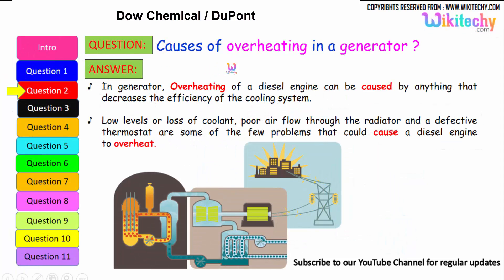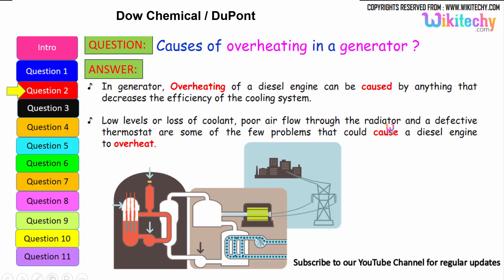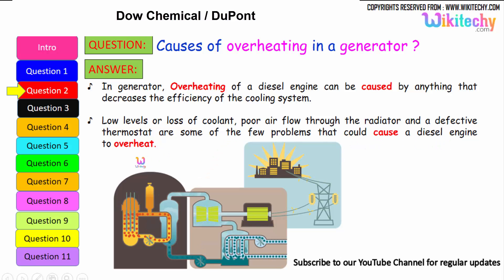Let us move on to the next question: causes of overheating in a generator. Overheating of a diesel engine can be caused by anything that decreases the efficiency of the cooling system. It can be due to loss of coolant or low coolant levels, poor airflow through the radiators, and a defective thermostat — some of the problems that could cause a diesel engine or generator to overheat.